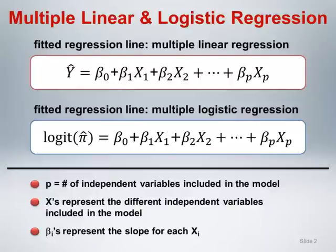The linear regression model assumes that a linear association between each independent variable and the outcome of interest is reasonable and appropriate. For the logistic regression model, the assumption of linearity between each independent variable and the outcome is on the log scale.